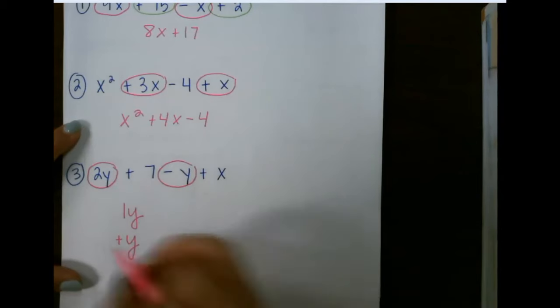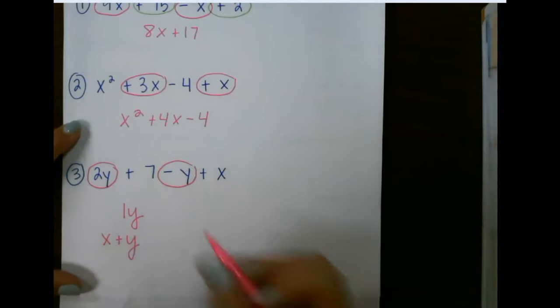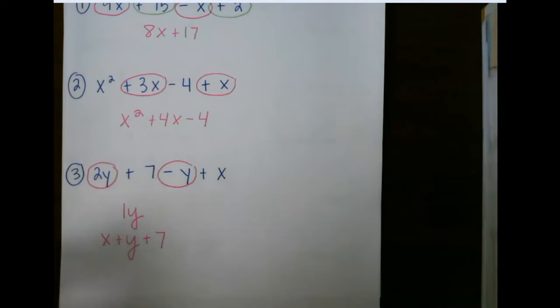We usually put them in alphabetical order, so I'll put x first. And our plain regular numbers, these are called constants, will come last.